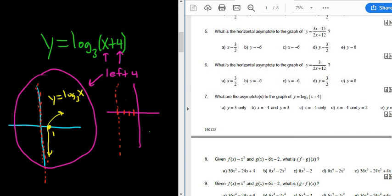And the rest of the graph looks similar, looks something like that. So you see now the equation of the vertical asymptote is x equals negative 4.